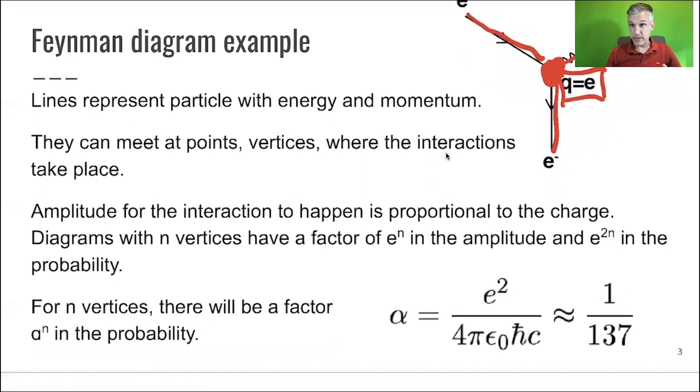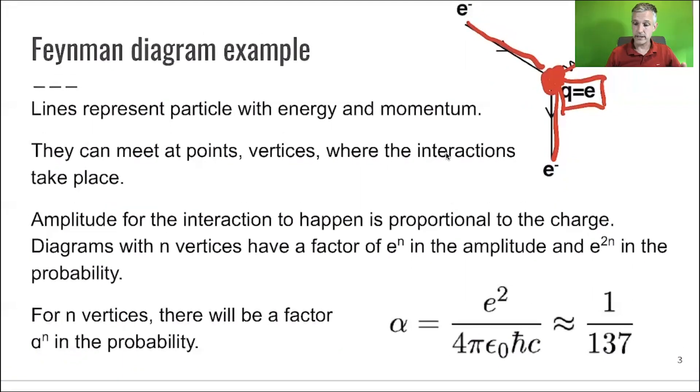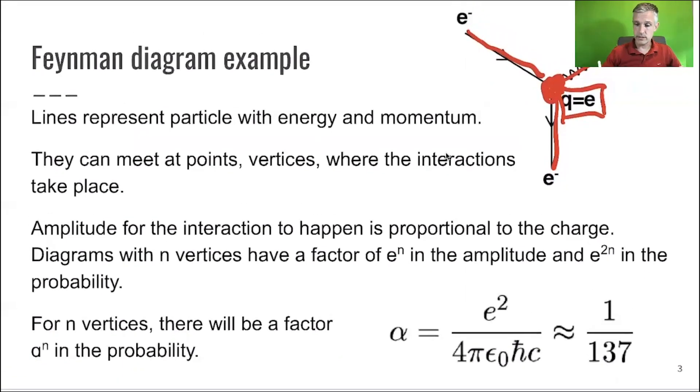The amplitude then turns out to be proportional to the charge or to this coupling. And the diagrams with n vertices, so n of those components here, get a factor e, the charge, to the nth power in the amplitude. And e to the second, because we want to calculate a probability, you have to square the amplitude, you get a factor of e to 2n.